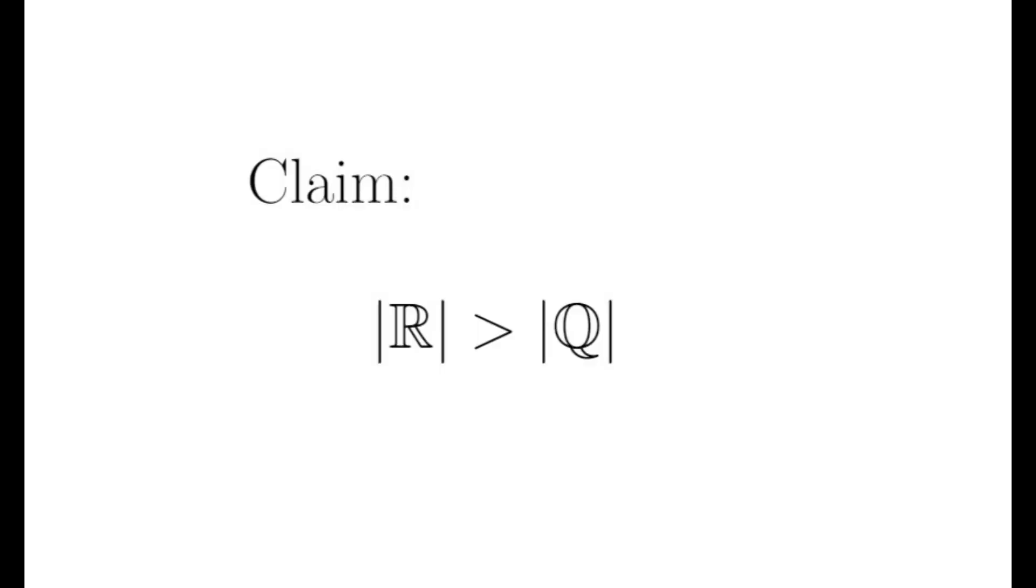To show there is more than one size of infinity, Cantor constructed a clever argument showing the size or cardinality of the real numbers R is strictly greater than the size or cardinality of the rational numbers Q. I will be using this notation for cardinality for the remainder of the video.